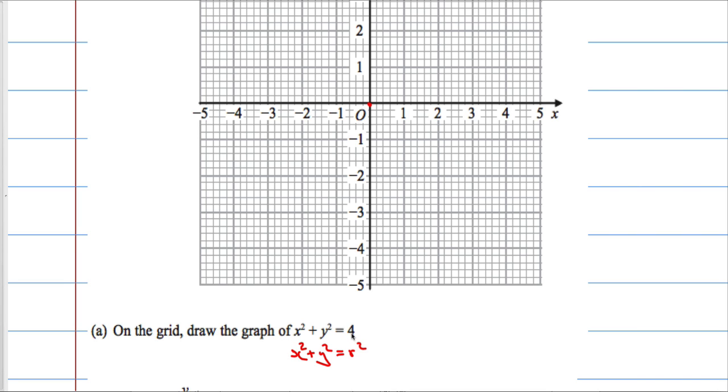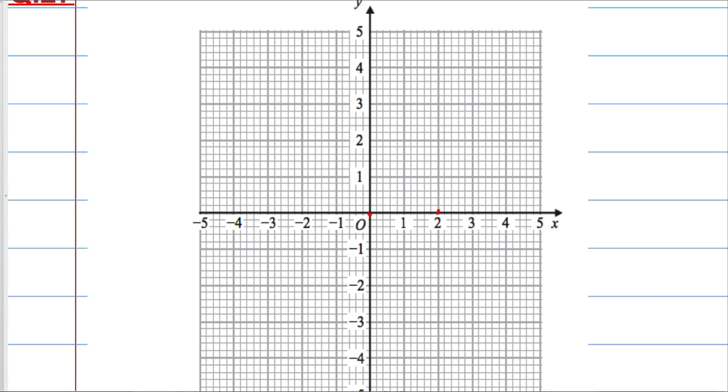So if r squared is 4, that means the radius is 2, which means the circle should pass through all these points.